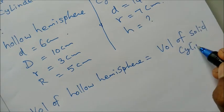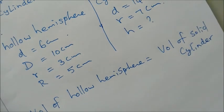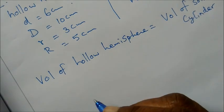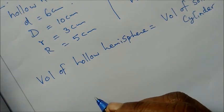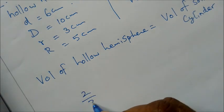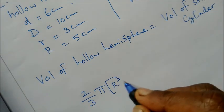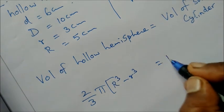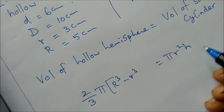Volume of hollow hemisphere is 2 by 3 pi R cube. Since it's hollow, 2 by 3 pi capital R cube minus small r cube equal to pi r square h.